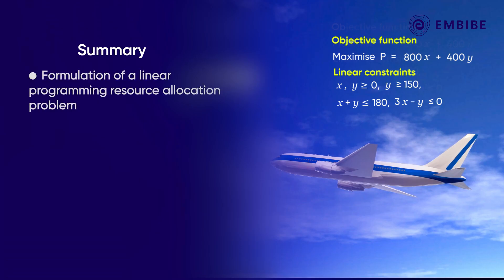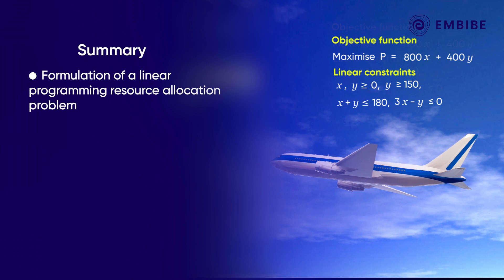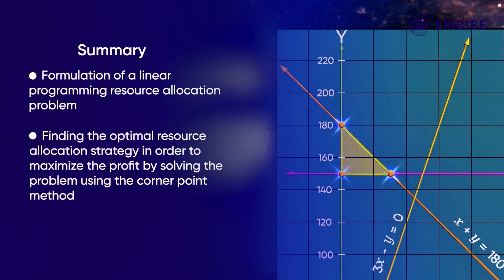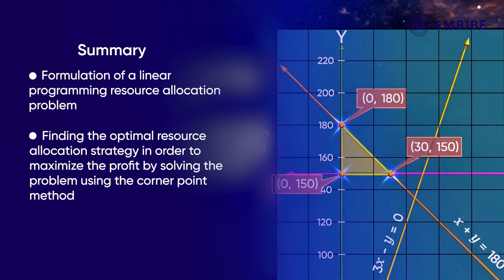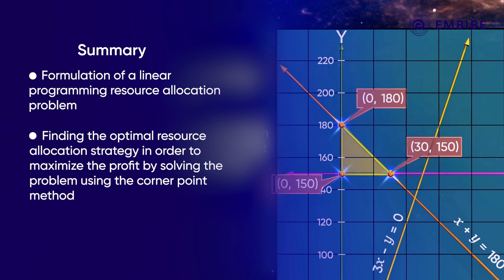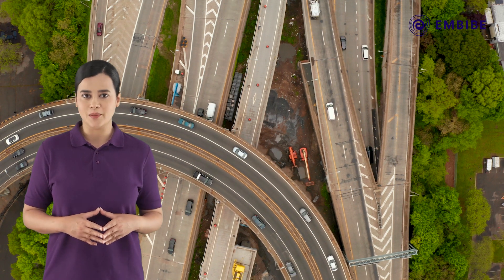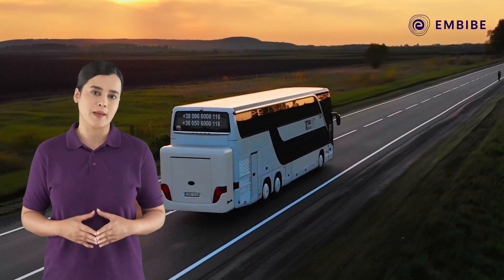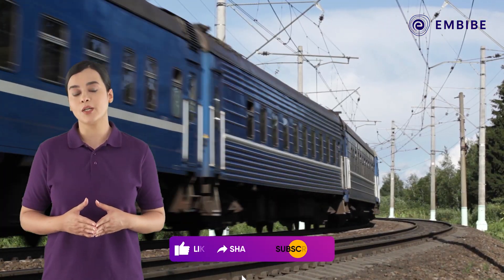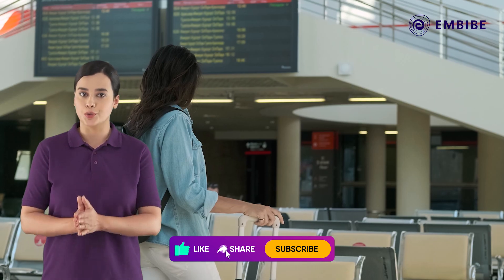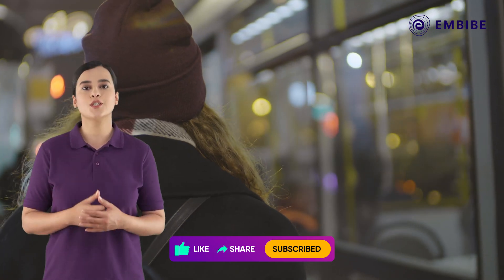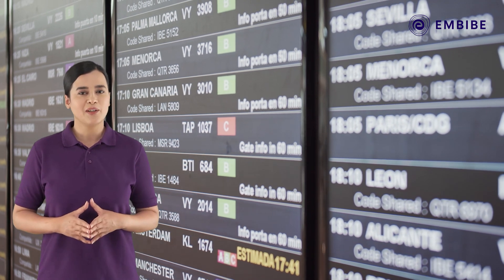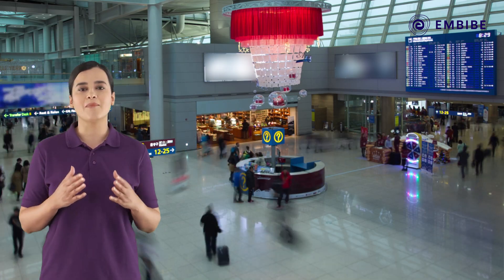To summarize, in this video we've learnt to formulate a linear programming resource allocation problem and find the optimal resource allocation strategy to maximize profit using the corner point method. Transportation systems use linear programming for time and cost optimization. Bus and train routes use it to manage scheduling, travel time, and passengers efficiently. Airlines also use linear programming for pilot scheduling and routes. We will learn more about linear programming problems in our upcoming sessions.